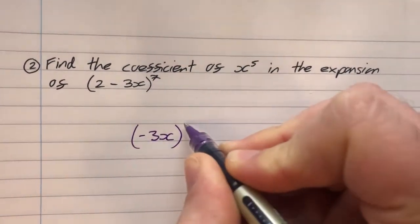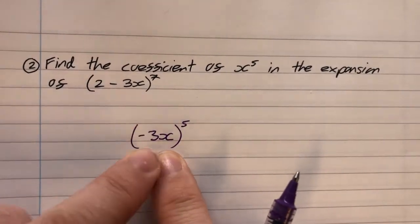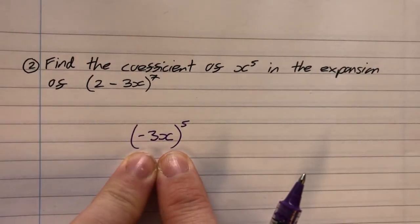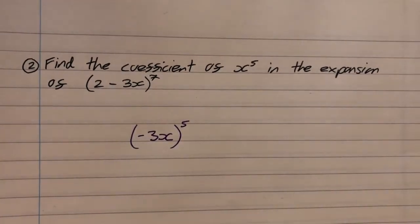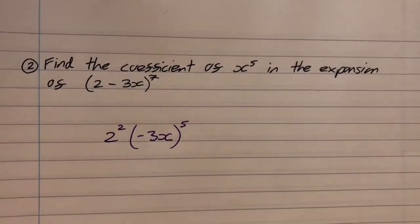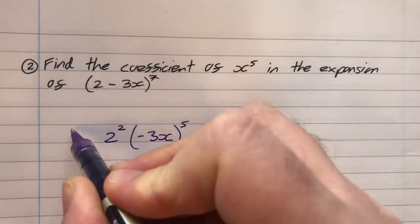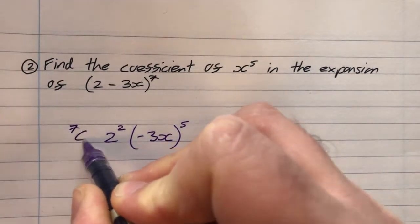So what I'm going to do is I'm just going to force out the term I want. I want x to be to the power of 5. So I want, therefore, minus 3x to be to the power of 5. Now I have to choose seven items because I have seven brackets and I have to choose one item from each bracket. So, therefore, I must be choosing two from the other two brackets. And the other step I need to do is I need to multiply that by how many combinations there are of choosing five 3x's from the seven brackets. And we notate that as 7C5.